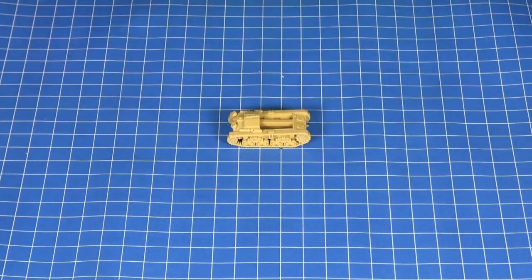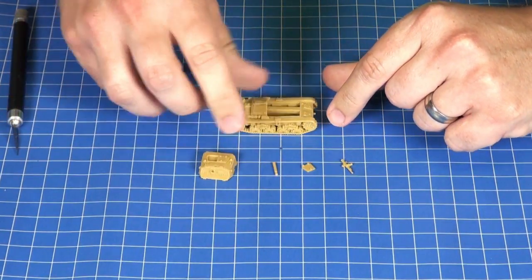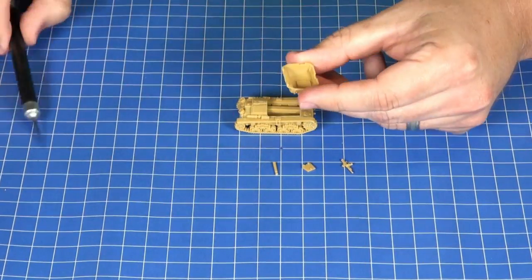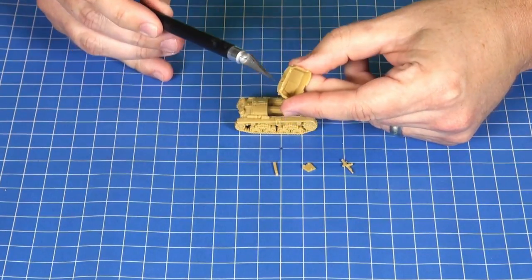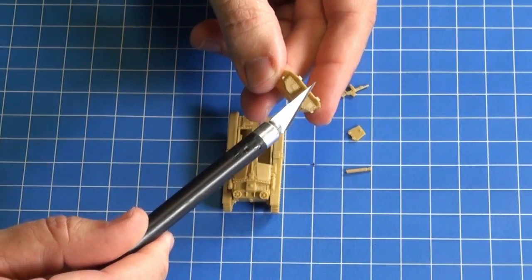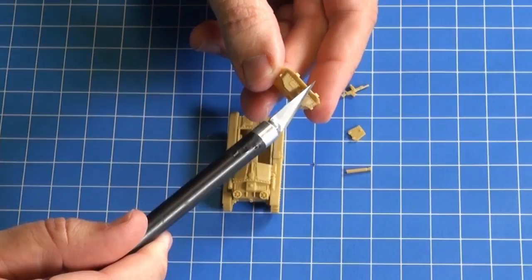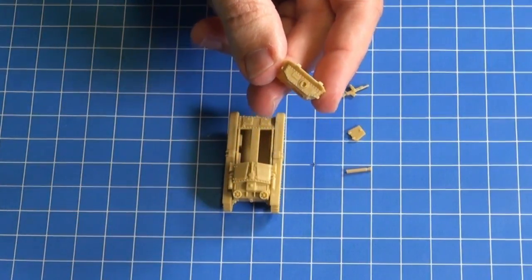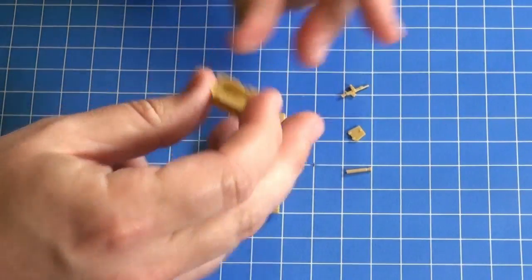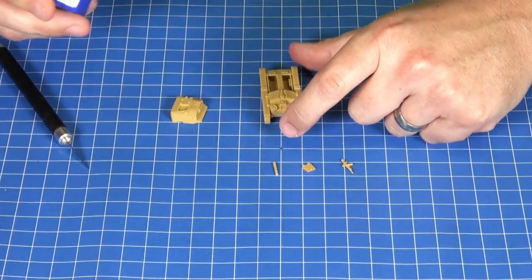Alright, that's the lower hull completely finished. Now we can add the casemate for the Semivente. Once you've clipped these out, it's a good idea to double check that you've cleaned those feeds completely back. You want a nice flat flush surface there. Always dry fit the casemate before gluing it in, just to make sure that you've given it a good clean.